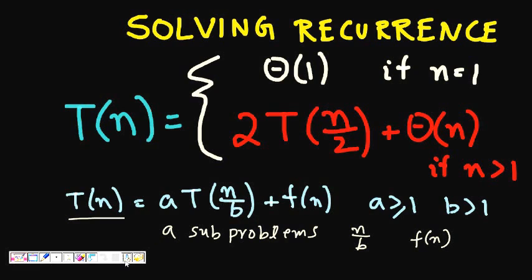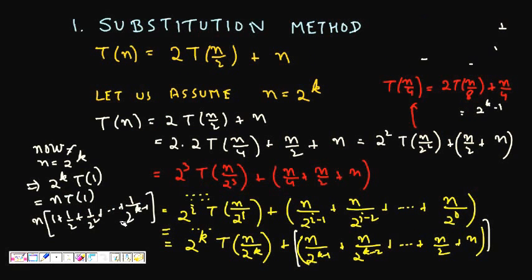To solve this, we can use a simple substitution method. For example, let's say T(N) = 2T(N/2) + N. This is of the general type T(N) = A·T(N/B) + F(N), where A = 2, B = 2, and F(N) = N. We will try to solve it using the substitution method.